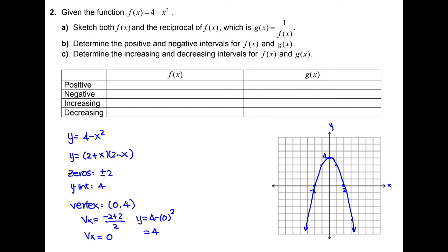After graphing the parabola, we follow the steps to graph the reciprocal function. Step 1: all the x-intercepts become vertical asymptotes. Step 2: points with y-values of positive 1 or negative 1 remain on the reciprocal function. Step 3: the maximum point becomes the minimum point. The parabola's maximum is at (0, 4), so the minimum of the reciprocal will be at (0, 1/4).